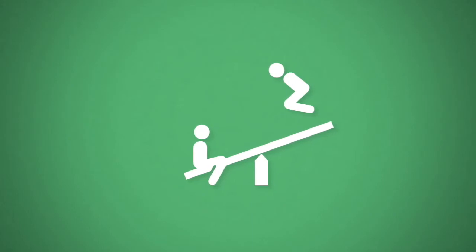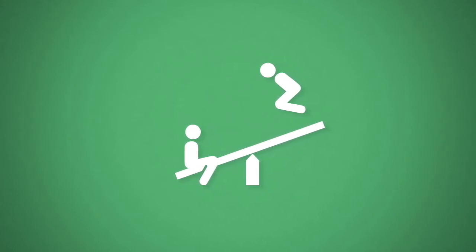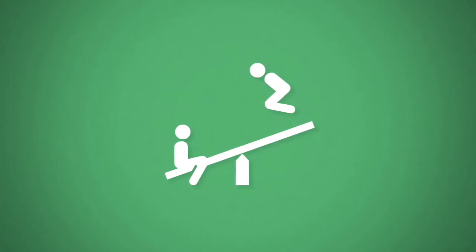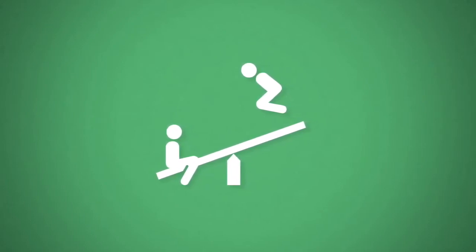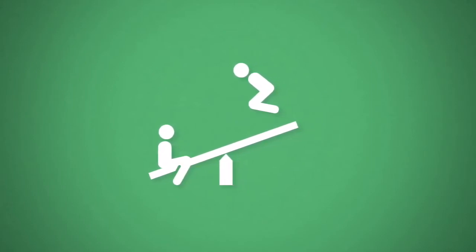An unbalanced essay includes only the evidence and arguments from one side. It neglects to mention the evidence and arguments from the opposing side, or it may include a few flimsy points from the opposing side and then immediately move on to the rebuttals.